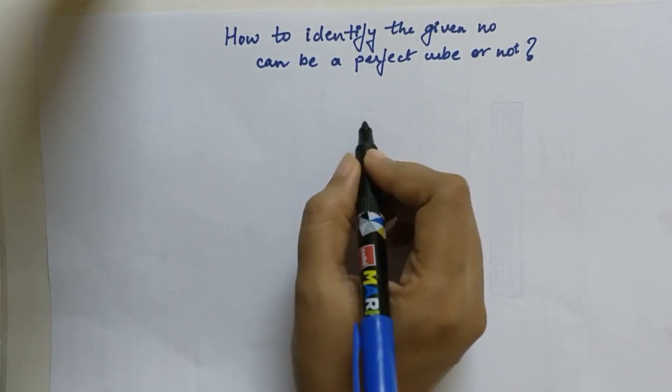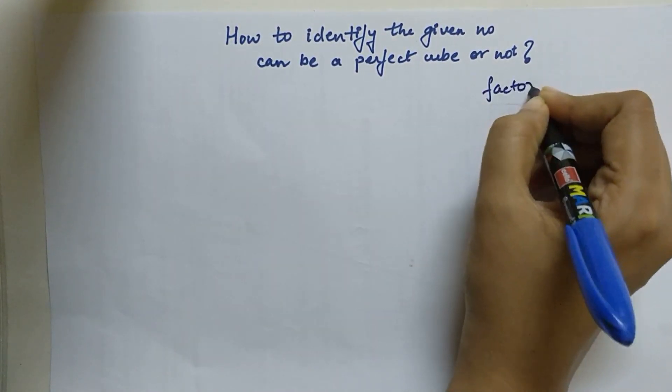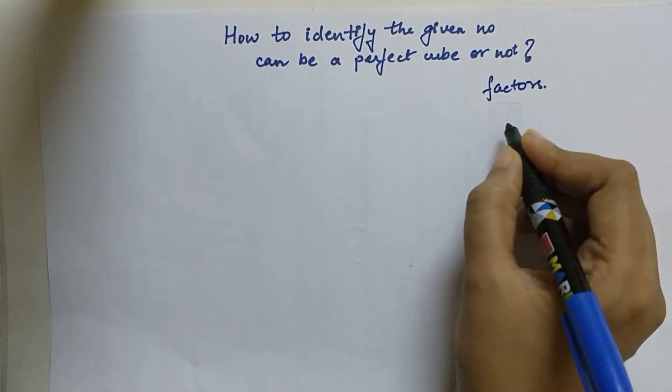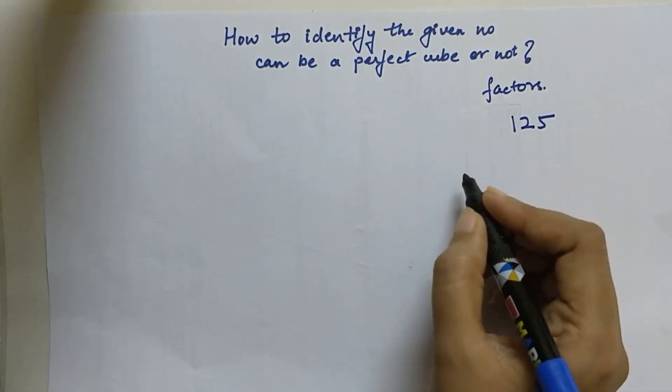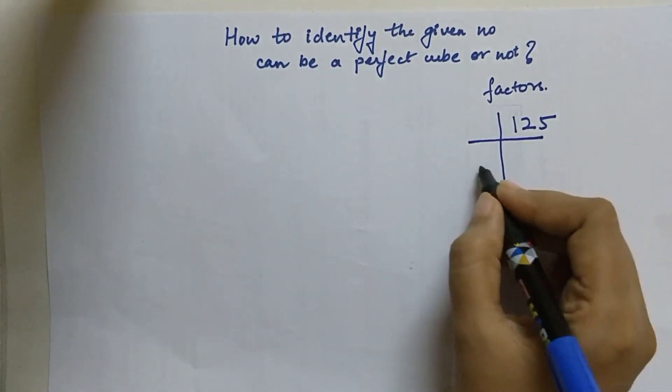Let's take for example if we have a number which says 125, and if I want to find its factors, then we just start dividing it with the smallest prime number.